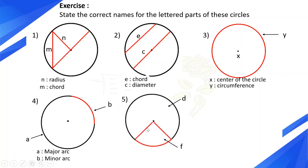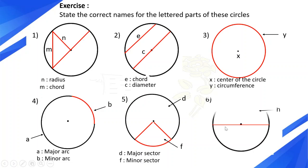We have a sector: F is the minor sector and D is the major sector. This part of the circle is a semicircle, so H is a semicircle.